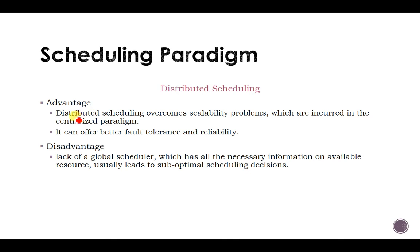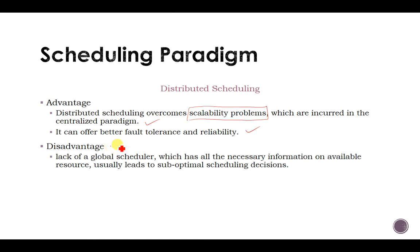Distributed scheduling overcomes the scalability problem present in centralized scheduling and offers better fault tolerance and reliability. If one scheduler fails, other schedulers can take responsibility for executing the remaining jobs. The disadvantage is the lack of a global scheduler with complete resource information, which usually leads to sub-optimal scheduling decisions.